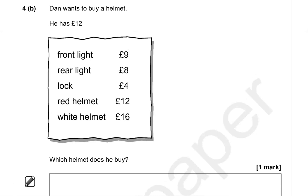Dan wants to buy a helmet and he has £12. Looking at the options: this one is a front light, so it's not a helmet; rear light, again not a helmet; lock, not a helmet. We've got a red helmet and a white helmet. He only has £12, so we're going to go for the red helmet.